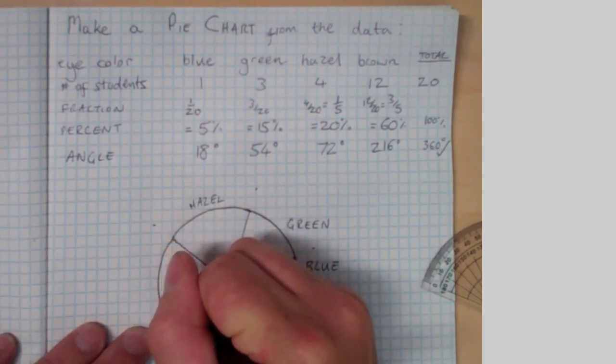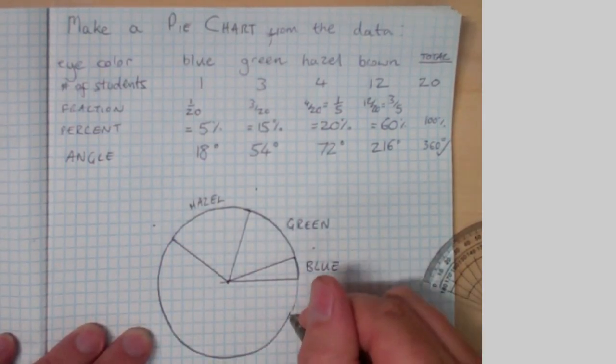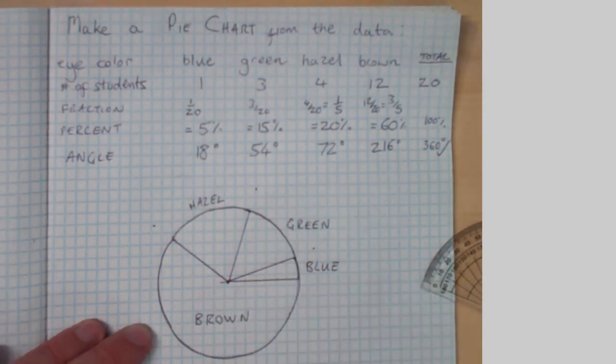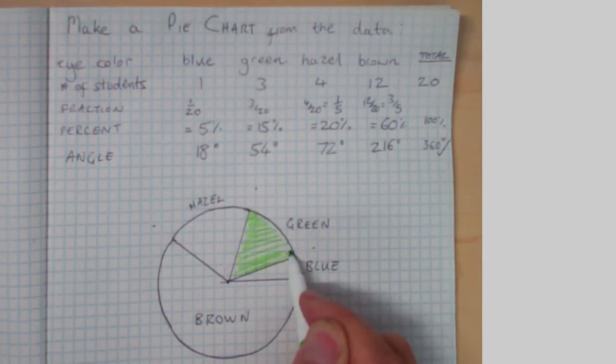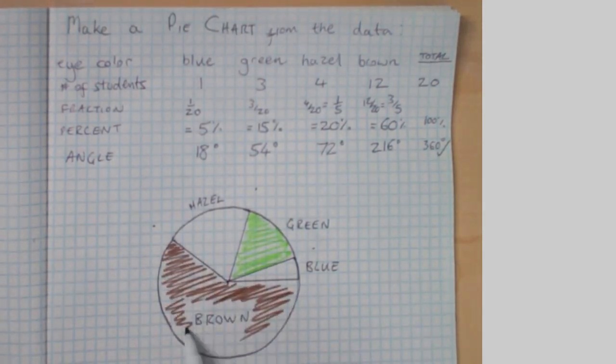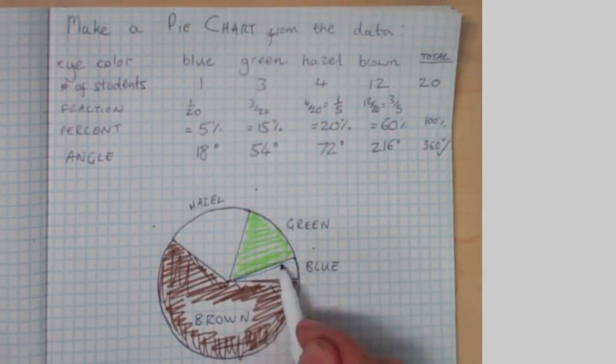Just a second check that we've got our 216 degrees there and I can start coloring my pie chart now. I've got my blue, green, hazel and brown so I can color code them accordingly. Use felt tip pens. There we have it. There's our pie chart created.